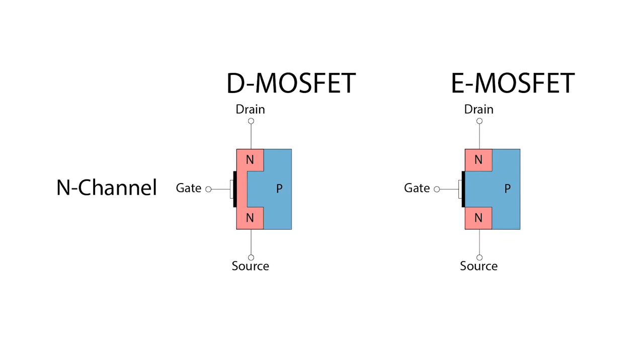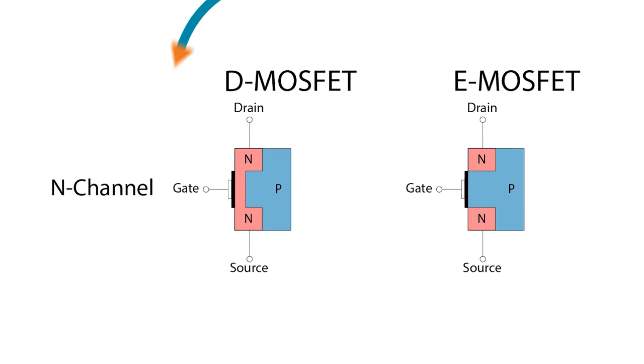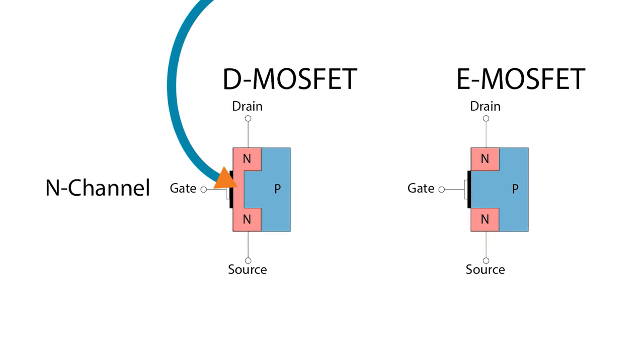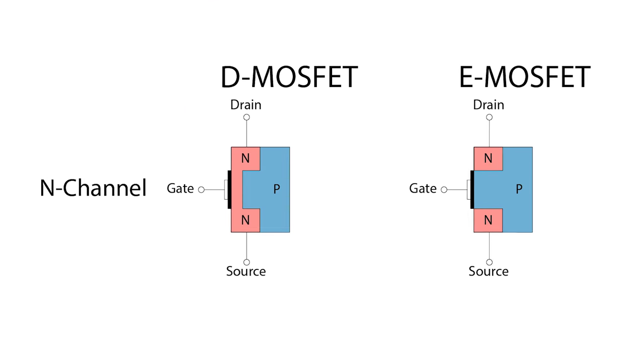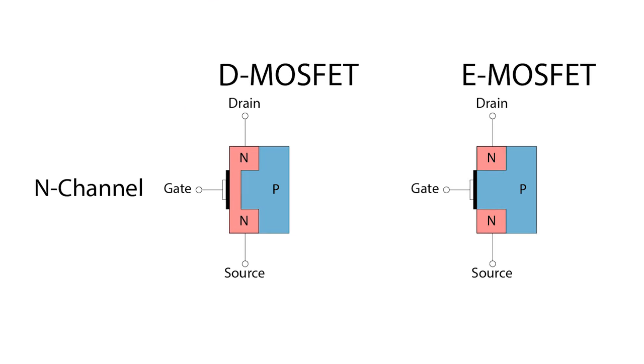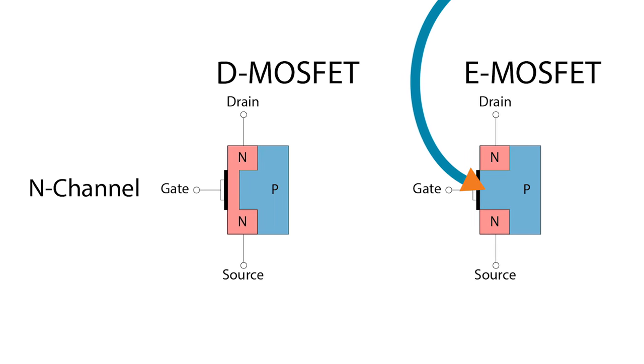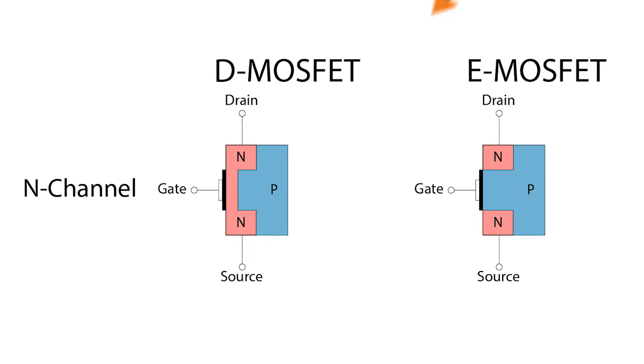While JFETs are strictly depletion mode devices, MOSFETs can be either depletion mode or enhancement mode devices. The main difference is in their construction. Depletion mode, or D-MOSFETs, have a physical channel connecting the source and the drain terminals. In enhancement mode, or E-MOSFETs, the source and drain are not connected, and rely on the gate voltage to form a channel between them.